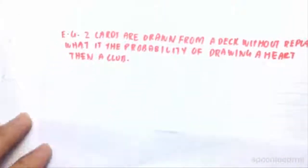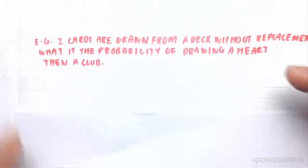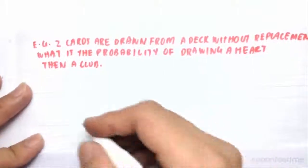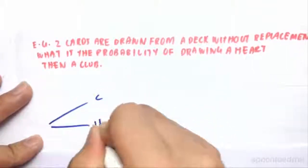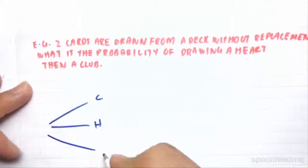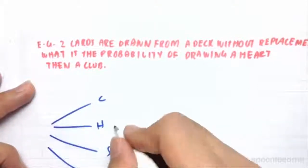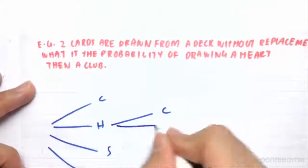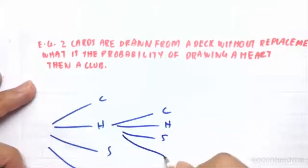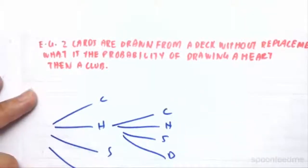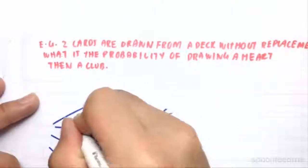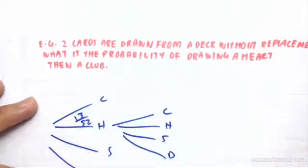So then, if we try to work out the probability of drawing 2 cards from a deck, the probability of drawing a heart and then a club, if we draw our probability tree, it looks something like this, our respective nodes. So we draw a heart first, club, heart, spade, and a diamond. So the probability of drawing the heart first would have been 13 on 52.